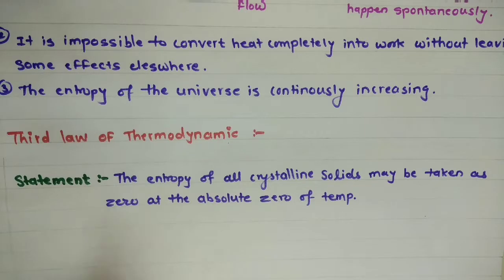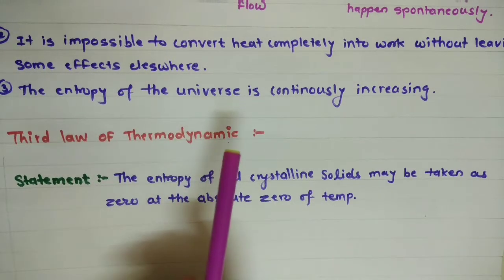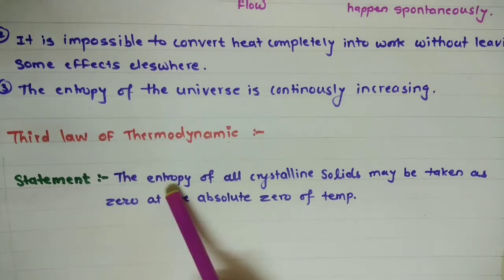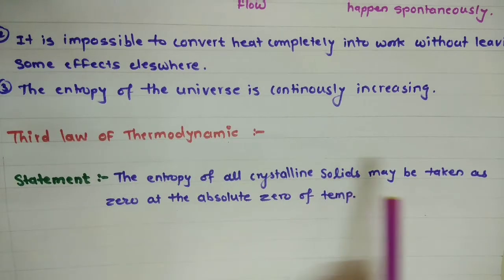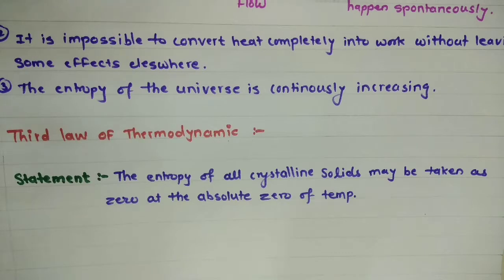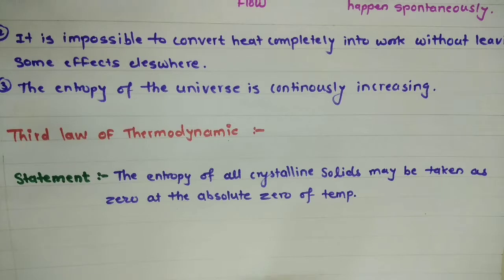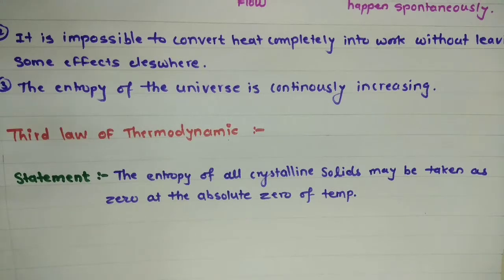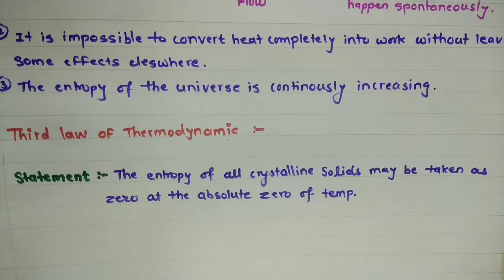After understanding the second law, we move towards the third law of thermodynamics. The statement is: the entropy of all crystalline solids may be taken as zero at the absolute zero of temperature. This means that in a perfect crystal at absolute zero temperature, there is a state of perfect order — atoms are regularly arranged, so there is zero disorderness, meaning entropy must be zero. I hope you properly understand the zeroth, first, second, and third laws of thermodynamics. If you like this video, please don't forget to subscribe, and thanks for watching.